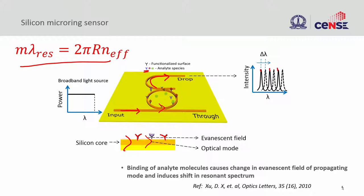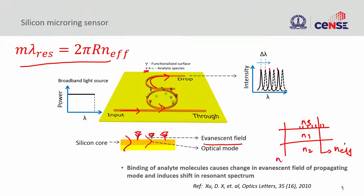You will have lots of analytes, and a particular species will come and sit onto the functionalized surface. When this species binds onto the surface, it will interact with the evanescent mode. Because of this binding, you will have a refractive index change — because the material density around that point is now different. We talked about N1, N2, and N3. There is now a local N3 variation. The N_eff around that point is going to be different. Wherever the molecules are sitting, your refractive index is going to be different, and when the refractive index changes, your resonant wavelength will change — a shift in resonance because of the analytes on the surface.